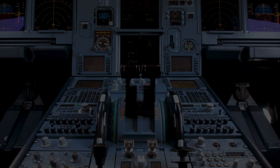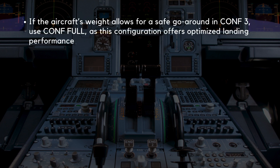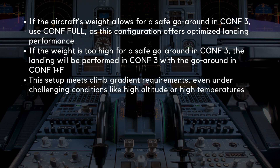Landing configuration is another critical decision point. If the aircraft's weight allows for a safe go-around in Config 3, the crew will likely use Config Full, as this configuration offers optimized landing performance. However, if the weight is too high for a safe go-around in Config 3, the landing will be performed in Config 3, with the go-around in Config 1+F configuration. This setup meets climb gradient requirements even under challenging conditions like high altitude or high temperatures.